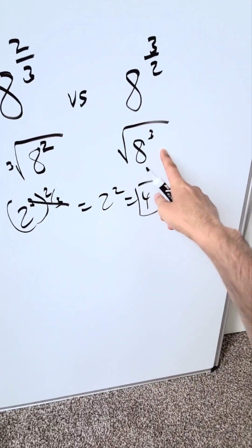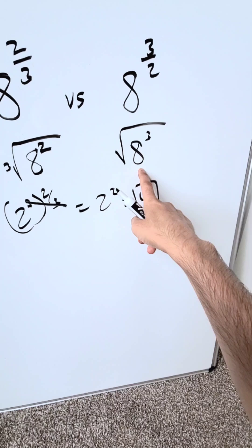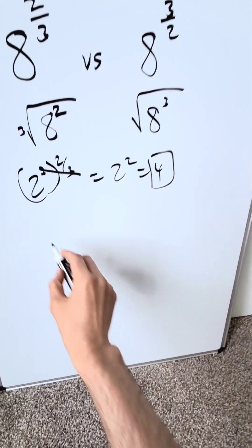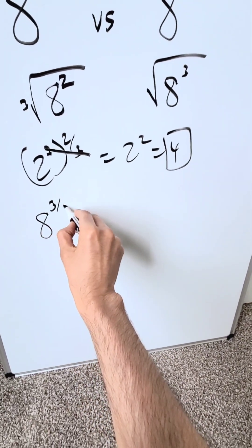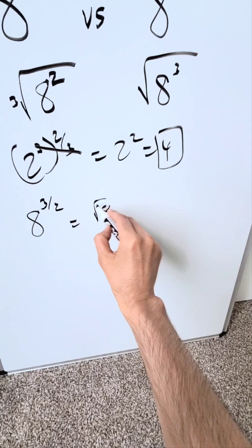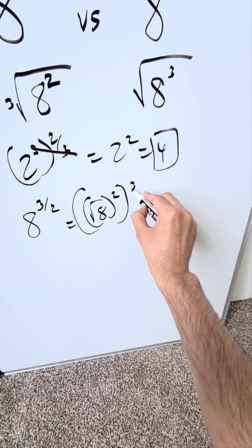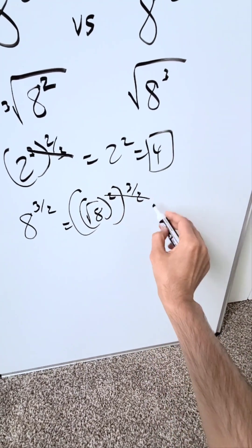Now let's look right here. We're looking here at a square root but we don't have a perfect square. How can we solve it? We're looking at 8 to the power of 3 over 2. You can write that as root 8 square and then you're looking at that to the power of 3 over 2 and you can cancel these out.